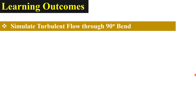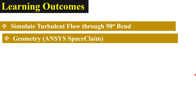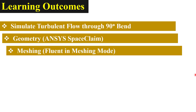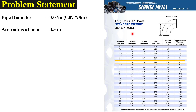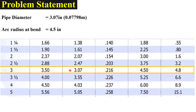In this video I will simulate turbulent flow through a 90 degree vent, create the geometry in ANSYS SpaceClaim, mesh the geometry in Fluent meshing mode, and find out the pressure drop and validate the solution. First, we will select a long radius 90 degree elbow from standard sizes. We will select a long radius 90 degree elbow with a nominal pipe size of 3 inches. The inside pipe diameter for this elbow is 3.07 inches.